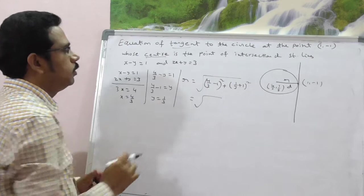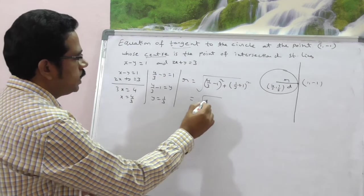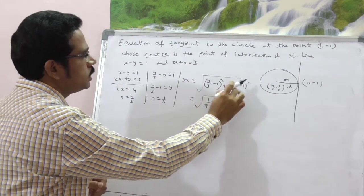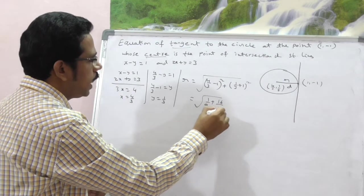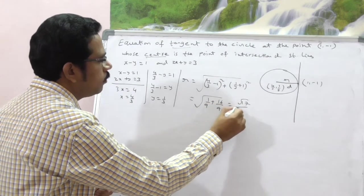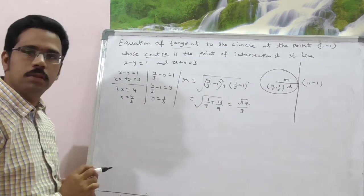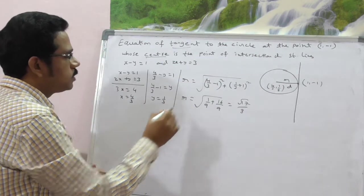So, now this is square root of, again 1 by 3 whole square is 1 by 9 plus here it is 4 by 3 whole square is, 4 square is 16, 16 by 9, this is called root 17 by 3. So, we got radius as root 17 by 3.